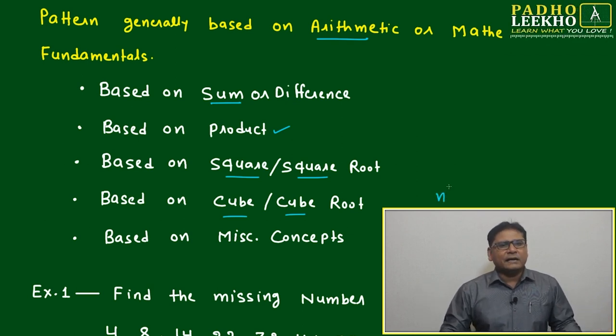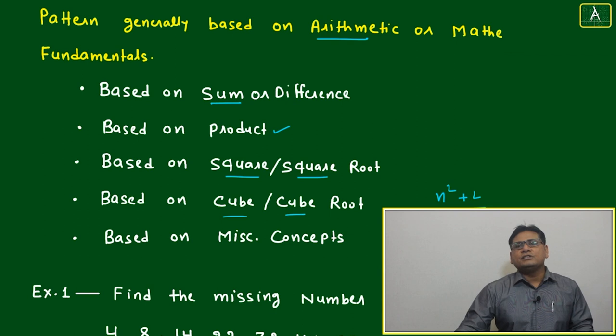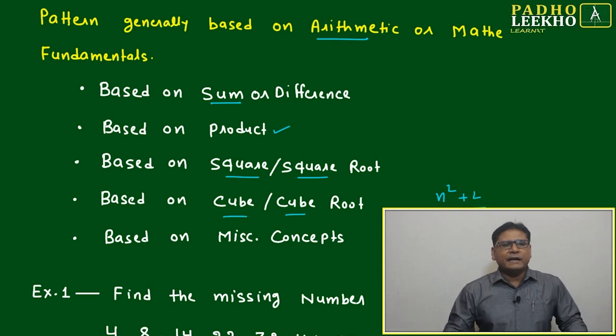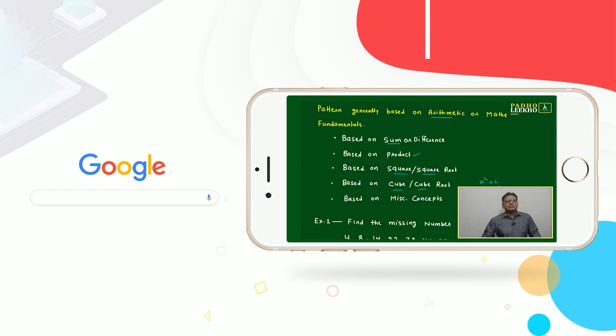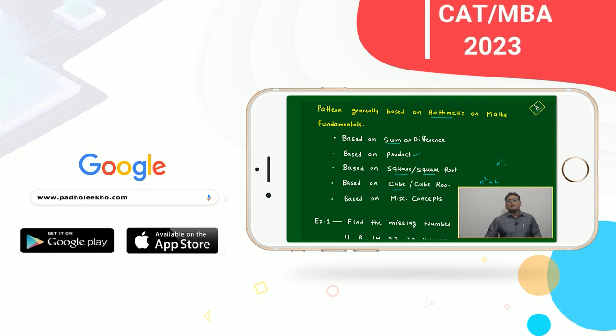Any concept we can write: n square plus 2, this is one mathematical relation. n cube minus 1, this is one mathematical relation. n square plus n cube, that is one mathematical relation. n plus 9, this is one mathematical relation. It can be infinite, infinite types of miscellaneous.